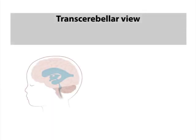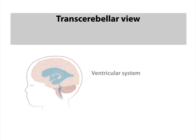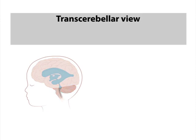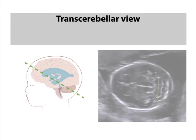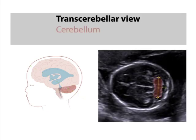In this image, the cerebral cortex, the ventricular system, and the hindbrain are seen. The transcerebellar view is an axial or transverse image of the fetal head, obtained by angling the transducer back through the posterior fossa. This view includes the cerebellum, shown in brown in both images, and the cisterna magna shown here in blue.